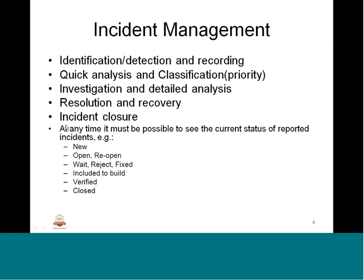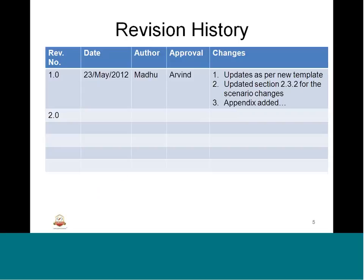Incidents go through different stages: new, open, wait, rejected, included in the build, verified, closed, etc. Every revision released as an artifact should have a clear revision history identifying the revision number, the date it was revised, the author, the reviewer or approver, and what changes that revision underwent. Upon each subsequent change, revision numbers 2, 3, 4 and so on are added, each clearly identifying the updated details. This is how revision history is maintained for each CI.